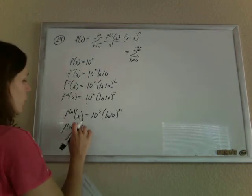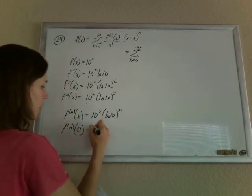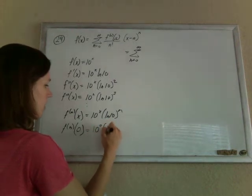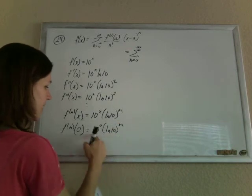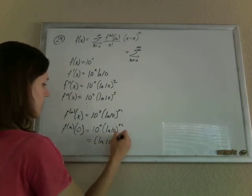Yeah. So when x is 0, this will be 10 to the 0 times the ln of 10 to the n. And 10 to the 0 is 1, so this is just going to be ln of 10 to the n.